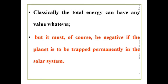Now let us understand the difference between the classical and the quantum case. In classical mechanics, the energy value can have any value — that means it is a continuous quantity. It can take any value, with the one condition that the energy should be negative for a bounded system, for the planet to remain bound.